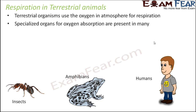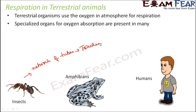In the case of insects, they have a network of tube-like structures called trachea, which can be considered as windpipes. There are some external openings called spiracles — air enters through these spiracles and then travels through the tubes called trachea. That is how respiration happens in insects.